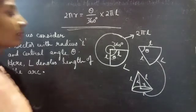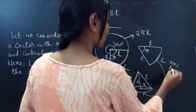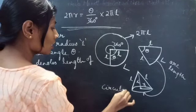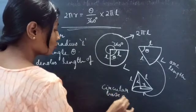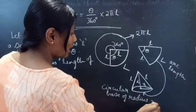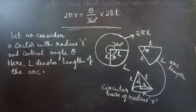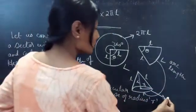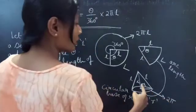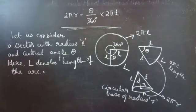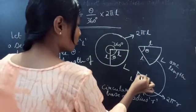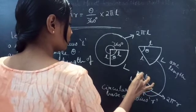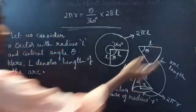Since the arc length is transformed into the circular base of radius R, the circumference of the circular base will be 2πR. This is a cone formed by the sector whose angle is theta.